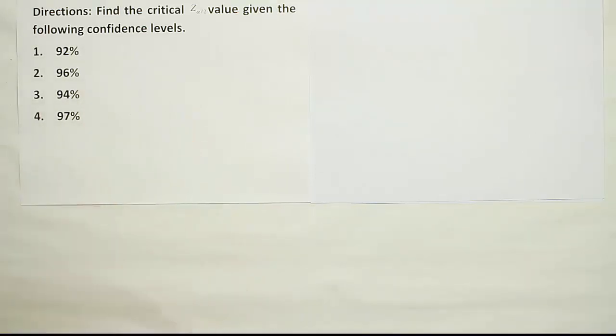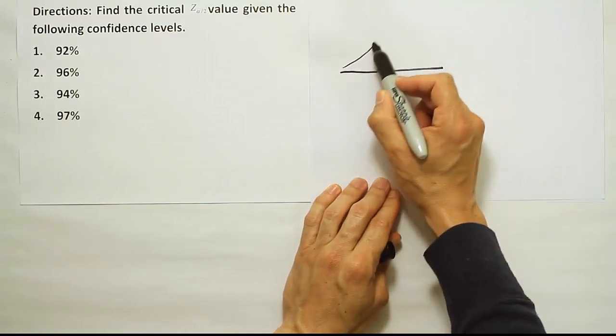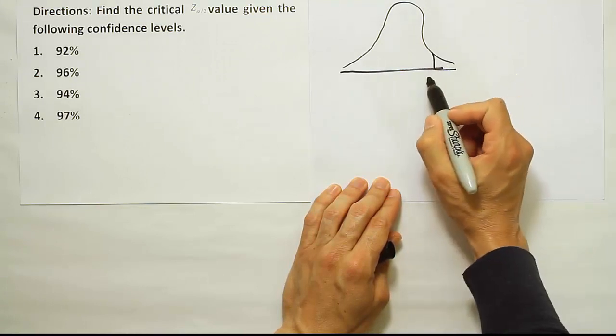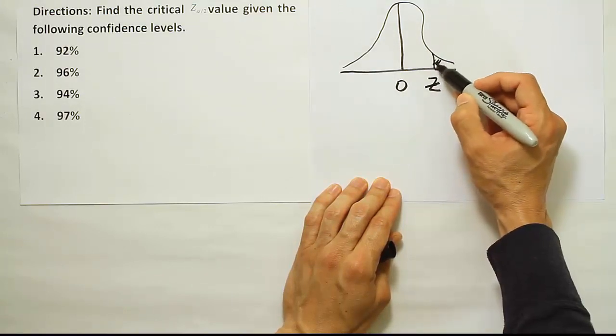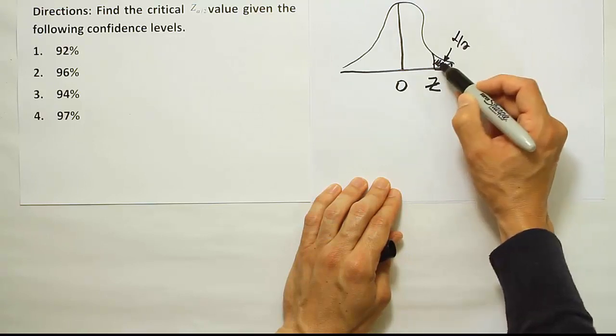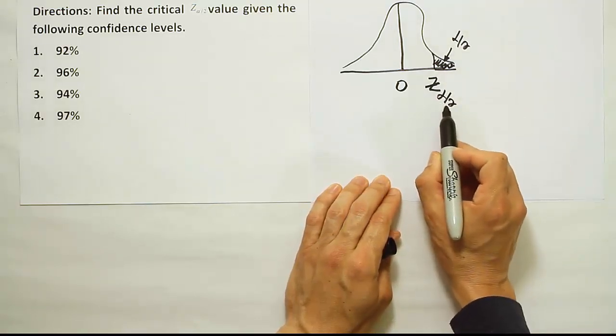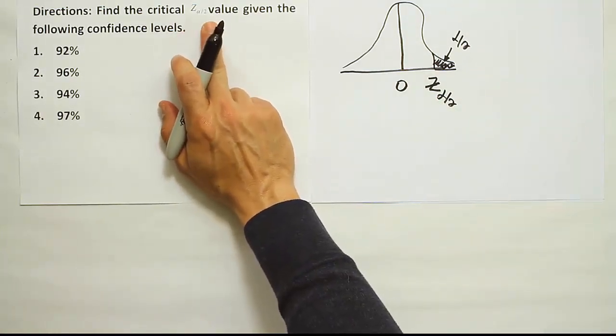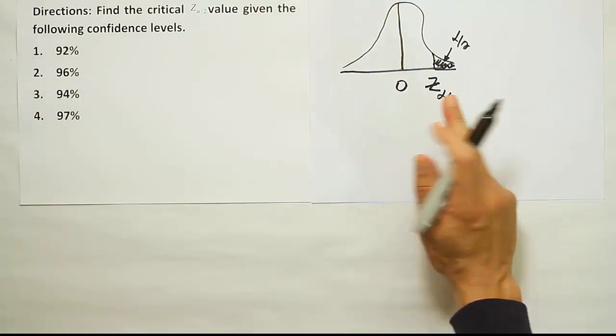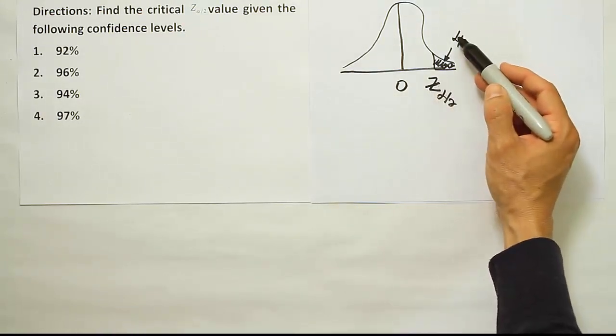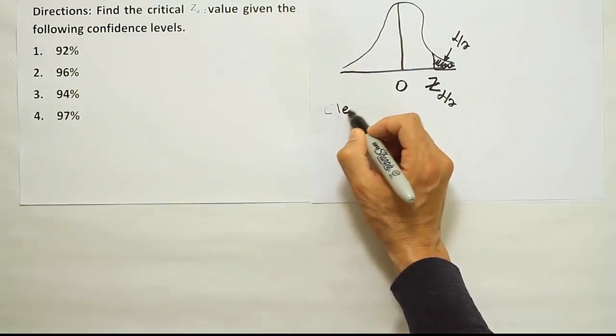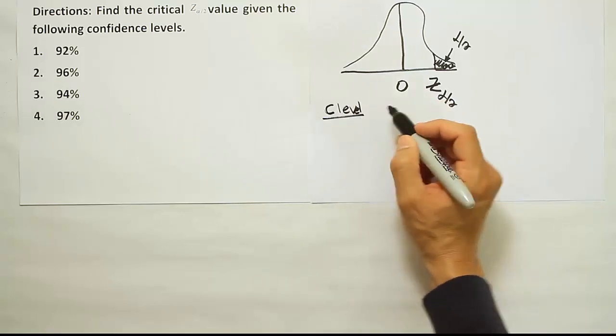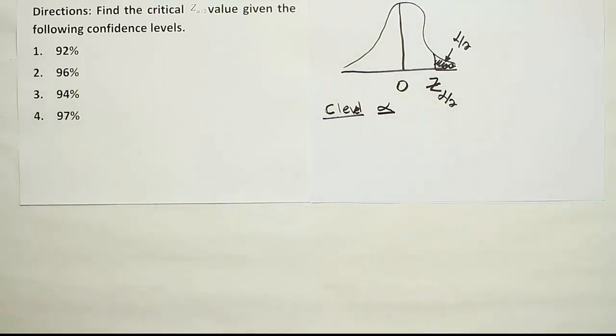Alright, so the logic of the critical Z alpha divided by 2 values should be mentioned again, just to make sure we're clear on what it means to find these things. We're trying to find a Z-score located here on the curve on the upper right-hand side. We're trying to find a Z-score that would leave alpha divided by 2 area in the tail. Alpha divided by 2 goes down here as the subscript notation, so that's where we get this notation Z alpha divided by 2 from. We're trying to figure out what Z-score corresponds to this location on the number line, a location where alpha divided by 2, or half of alpha, is located in the tail.